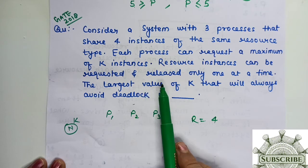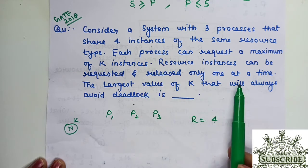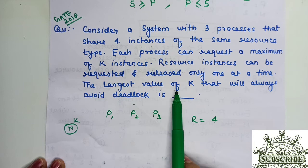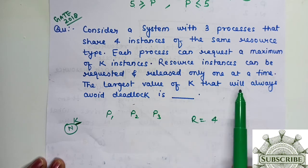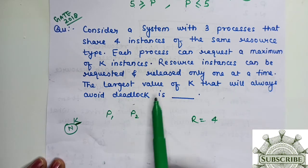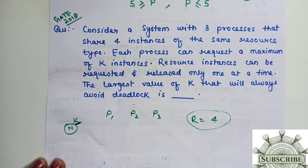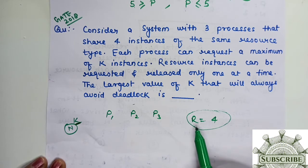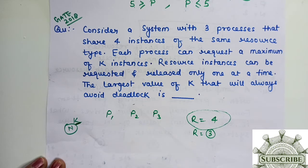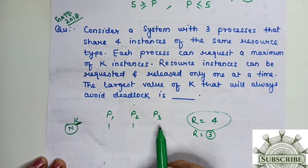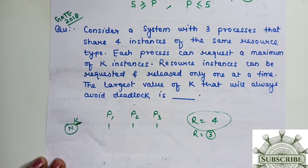Resource instances can be requested and released only one at a time. What will be the largest value of K? R ki value is 4, 3 processes. From R we add one extra, so we take 3. We have 3 processes. If we give one to each, if we reduce one from each, then how much is left? One extra resource is left here.